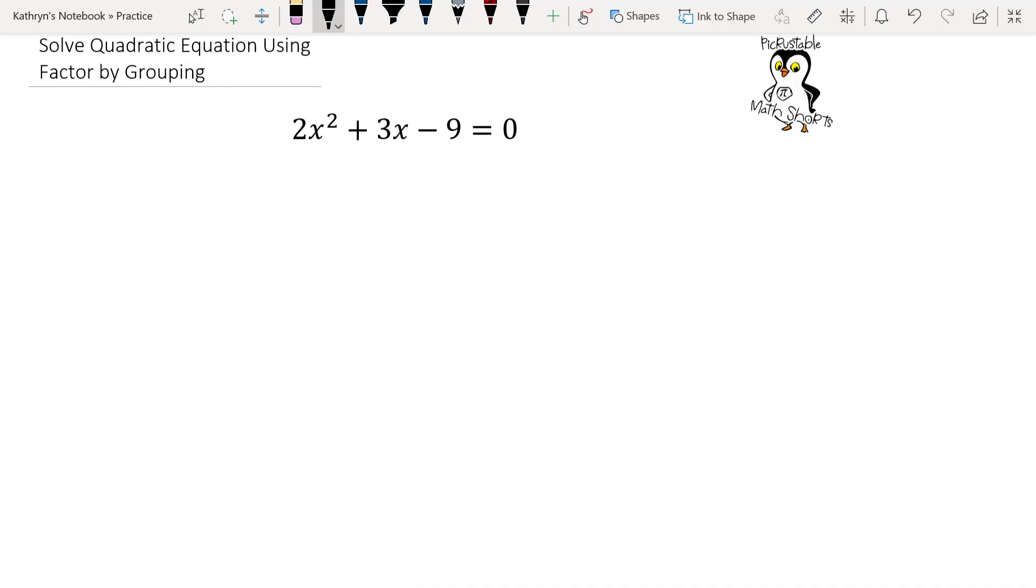Let's solve the quadratic equation using factor by grouping. First thing I know is I have to use the grouping method because I have a number here other than 1.